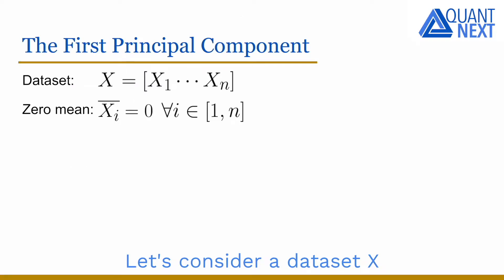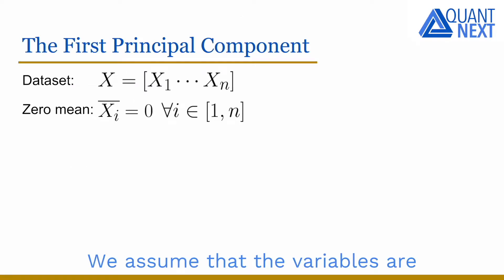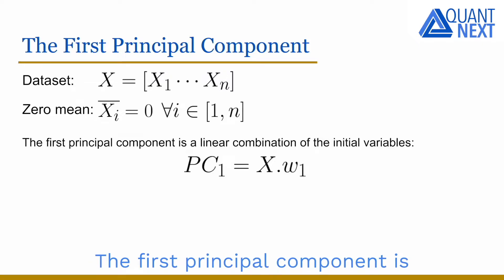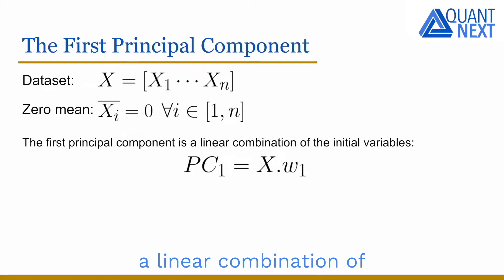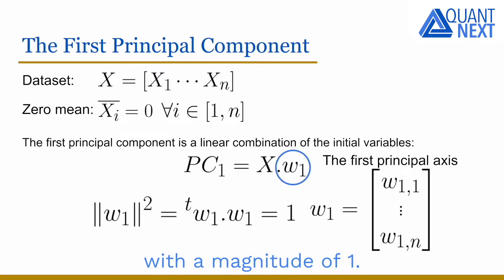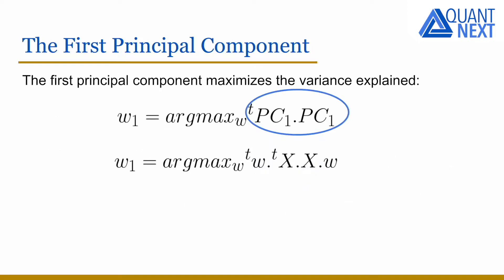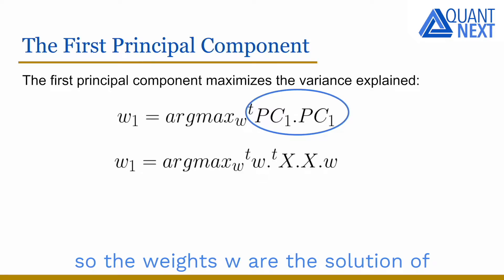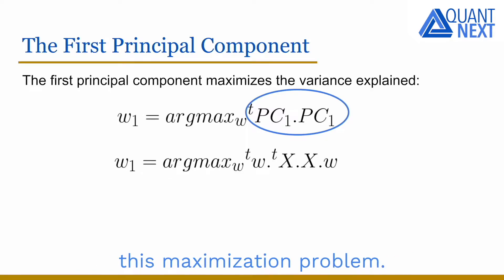Let's consider a dataset X with n elements. We assume that the variables are centered with zero mean. The first principal component is a linear combination of the initial variables. The vector of weights, or principal axes, is a unit vector with a magnitude of 1. The first principal component maximizes the variance explained, so the weights w are the solution of this maximization problem.